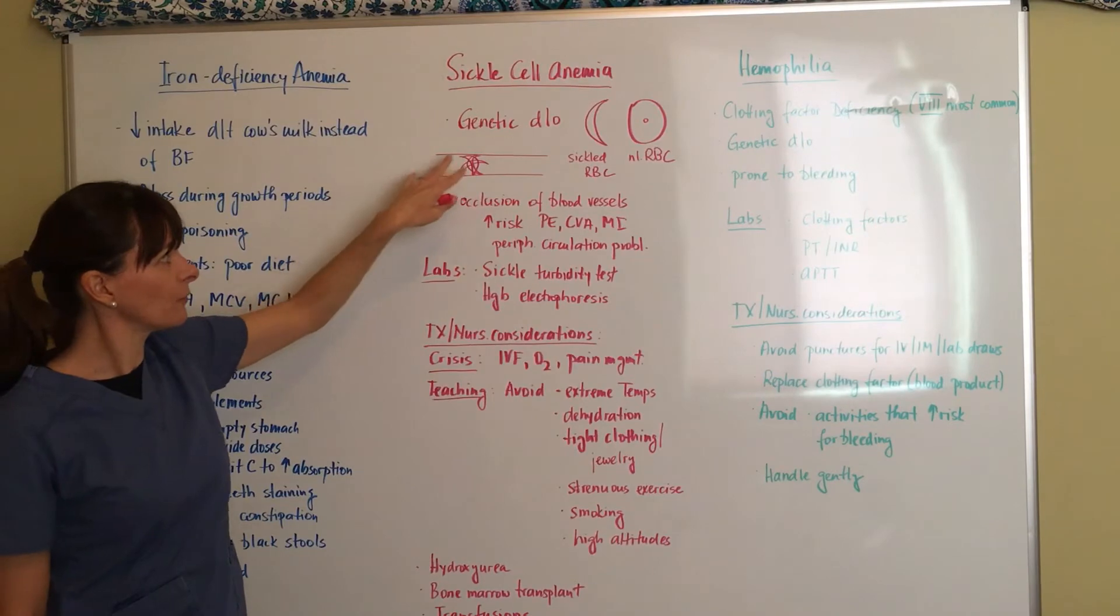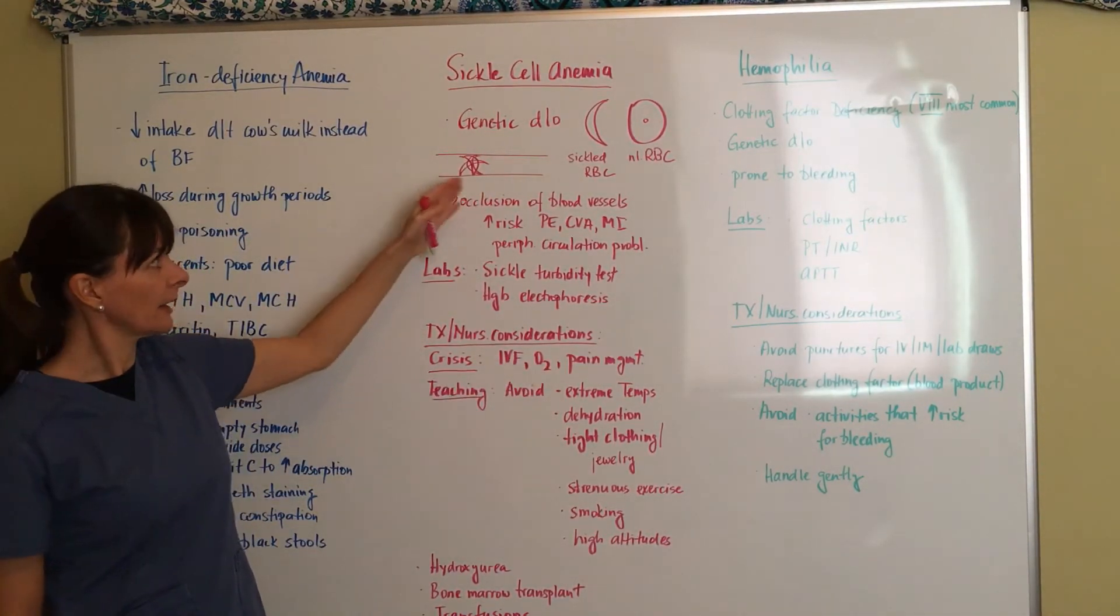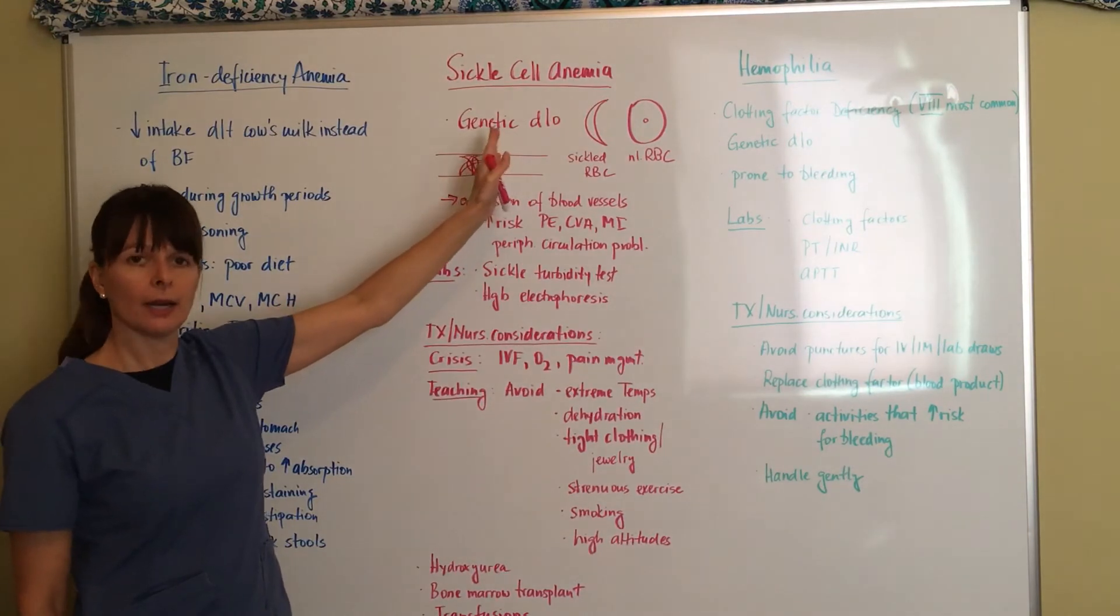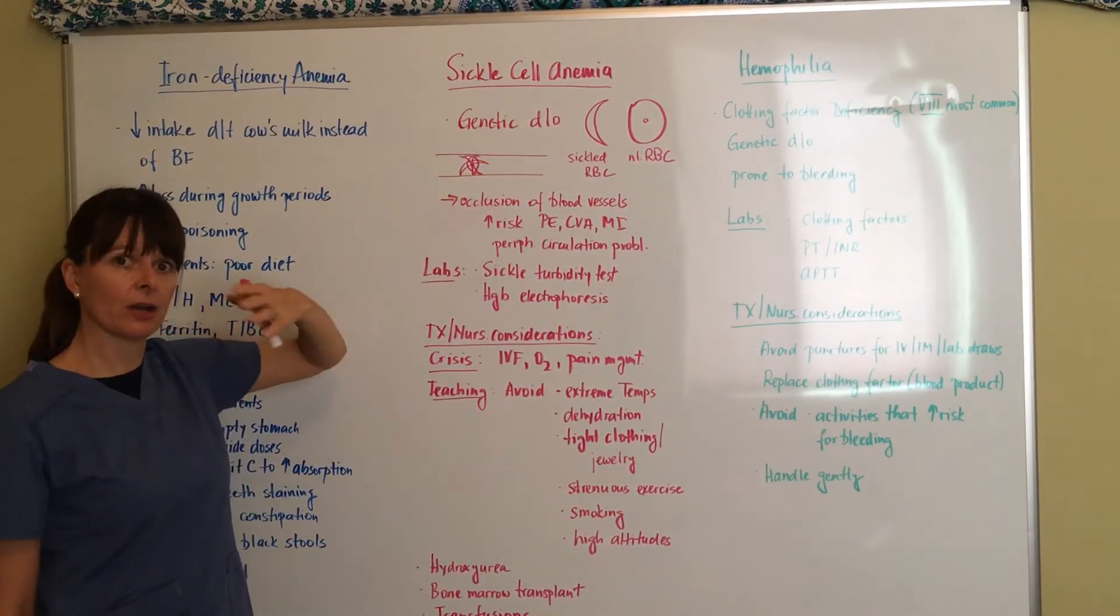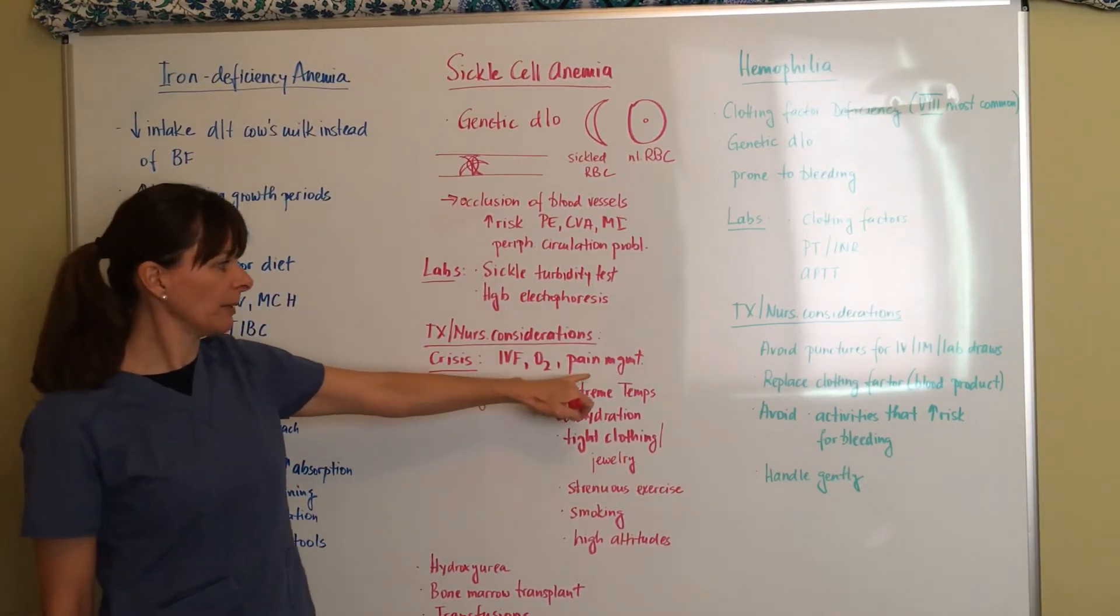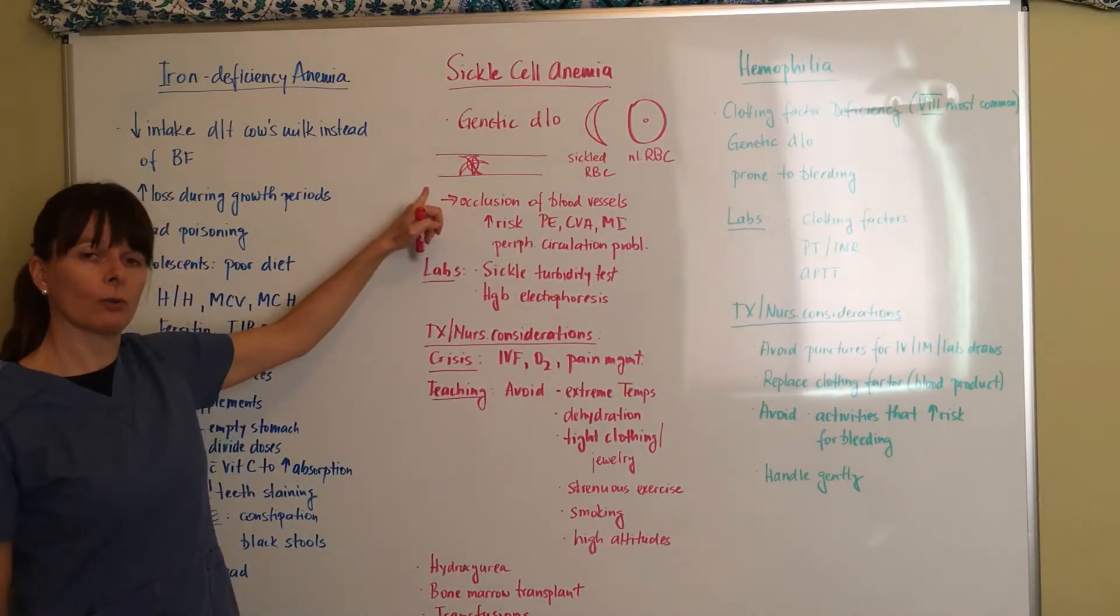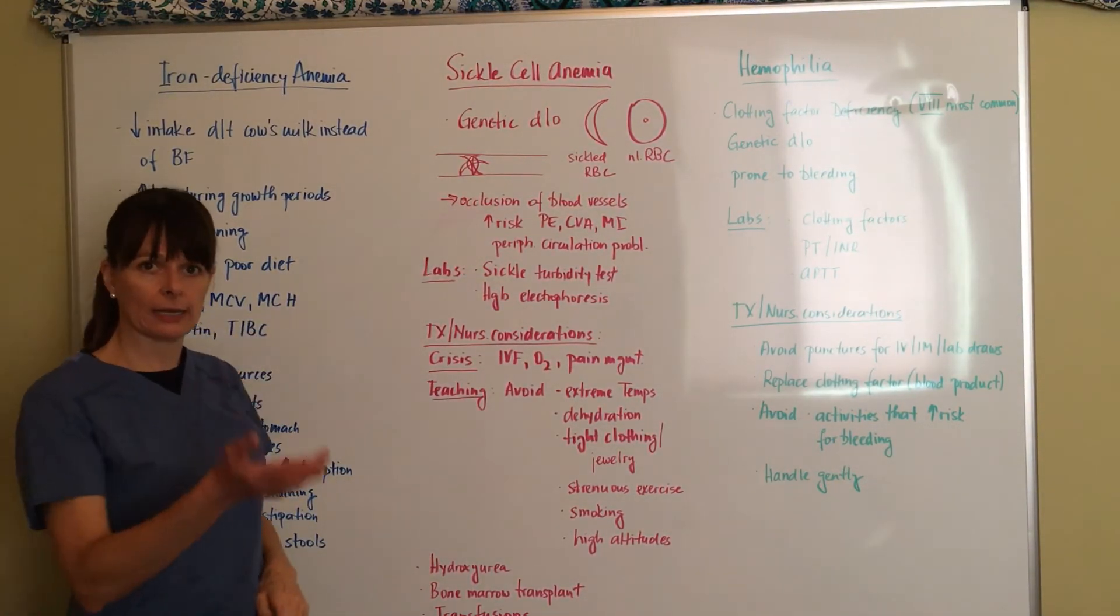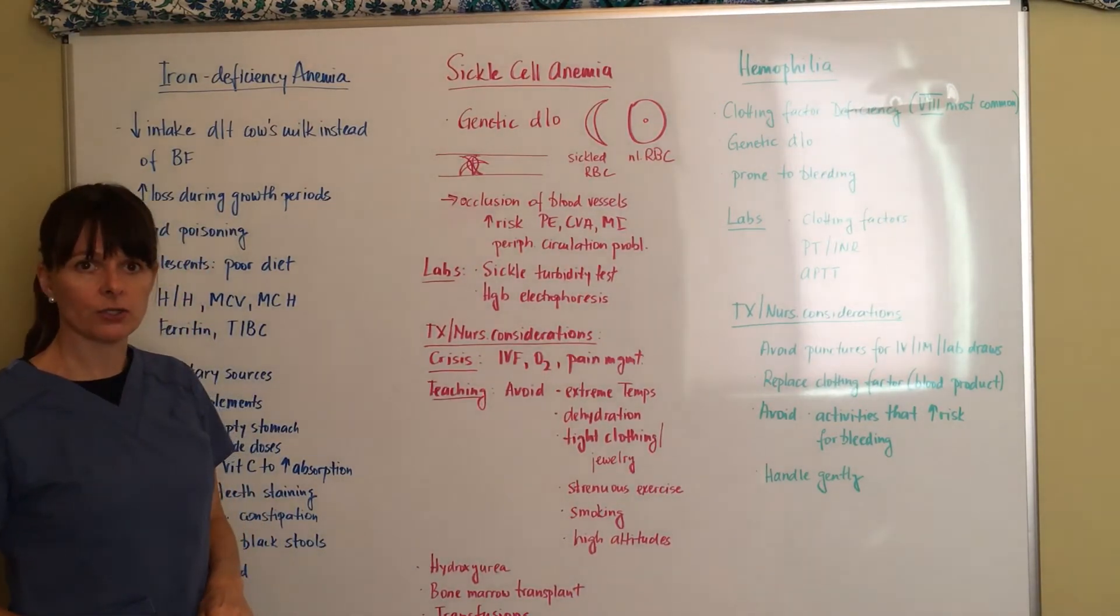Provide oxygen because there is no blood flow distal to that occlusion. We want to provide oxygen to get more oxygen into the cells, and then pain management. There's a lot of pain when a blood vessel is occluded because there's ischemia and eventually tissue infarction when blood flow completely ceases.